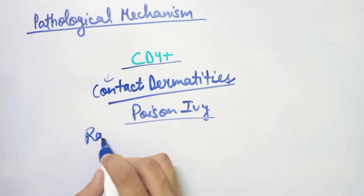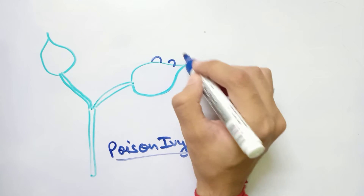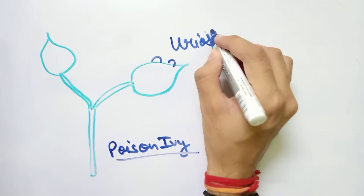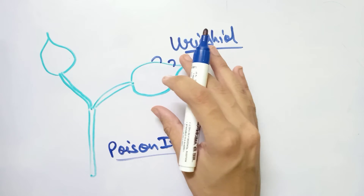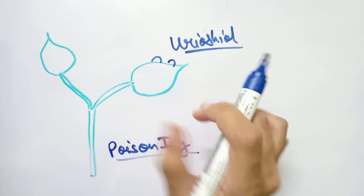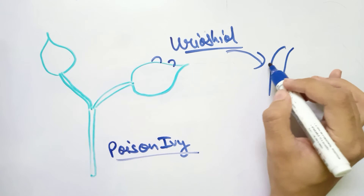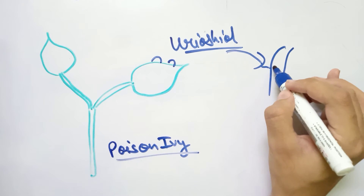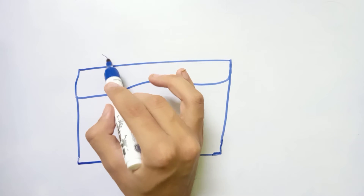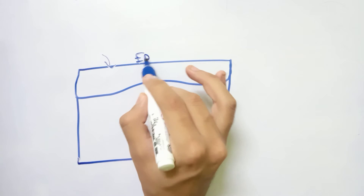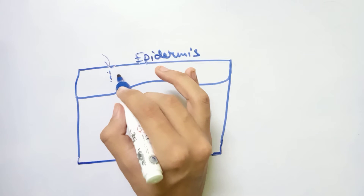Contact dermatitis caused by poison ivy can cause rashes on the skin. Poison ivy contains an allergen known as urushiol. When a host body comes in contact with poison ivy, this urushiol enters the host body through the epidermis of the hands as a foreign allergen.